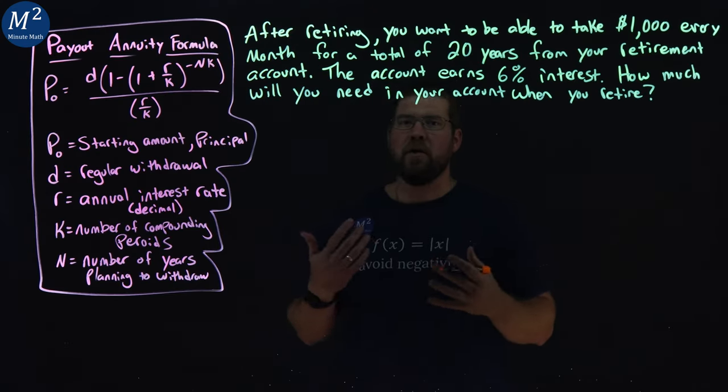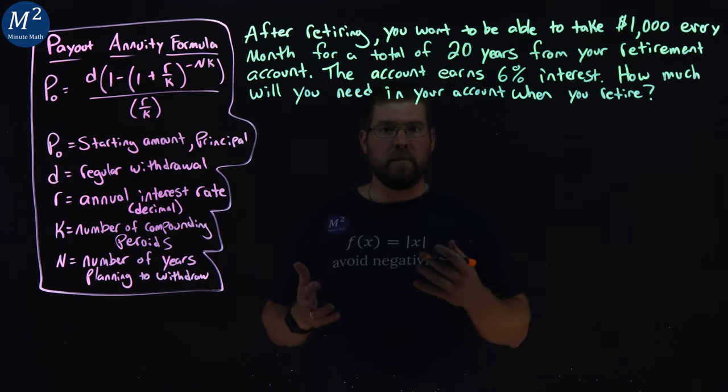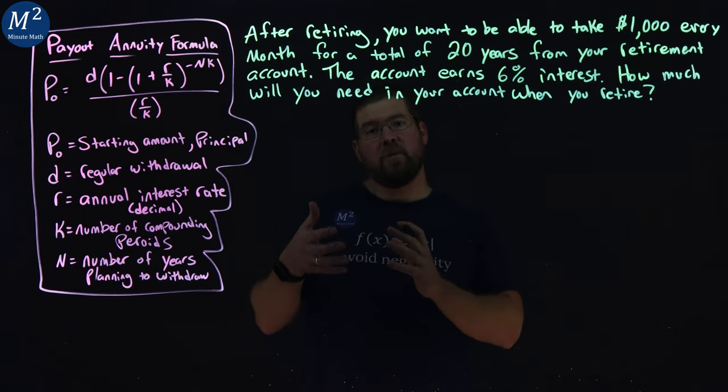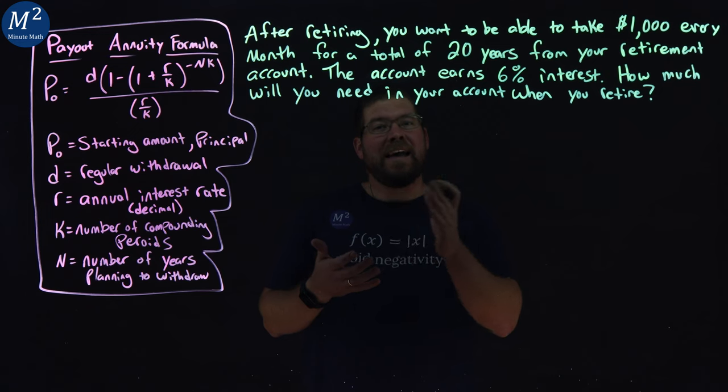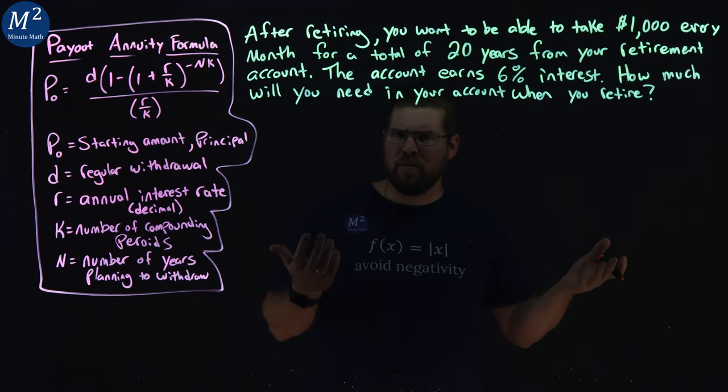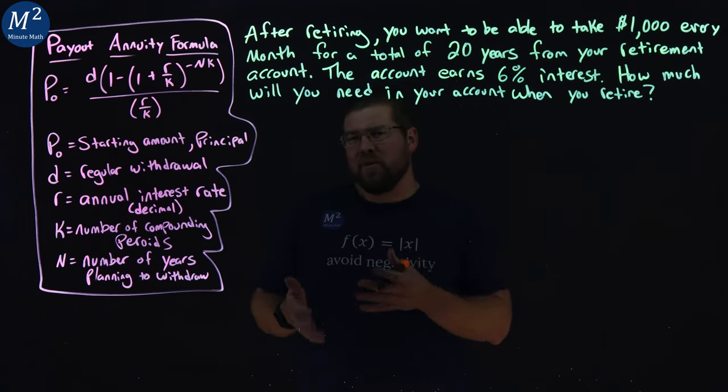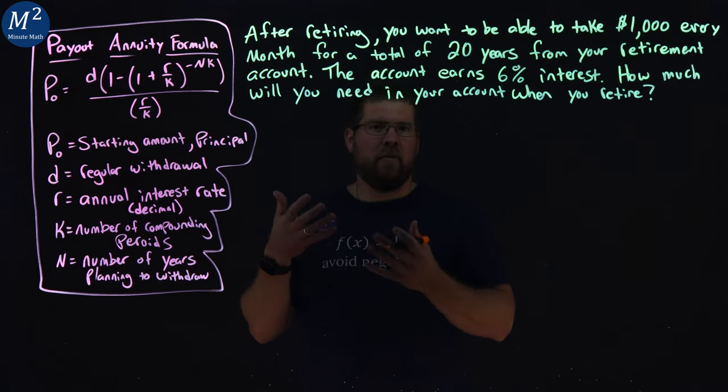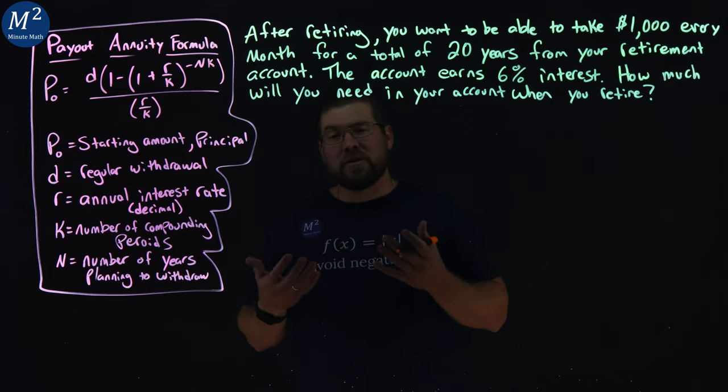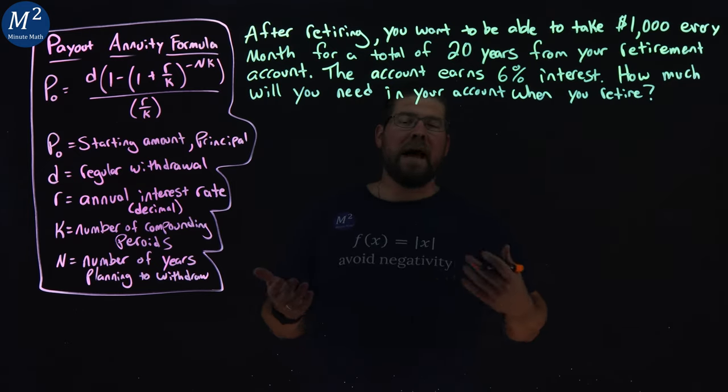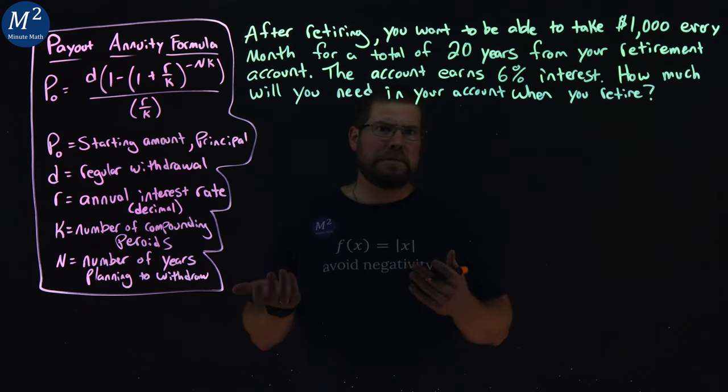This is a payout annuity formula, meaning we have a retirement account and that account is going to be paying out money to us as we retire. That account also will be increasing in value as interest grows, but you're still drawing money out and eventually it's going to go down to zero.